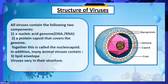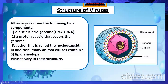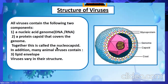Now, the structure of virus. All viruses contain the following two components: a nucleic acid genome in the head region — that is, they contain RNA and DNA, ribonucleic acid and deoxyribonucleic acid — and a protein capsid that covers the genome. This is the capsid; it covers the genome. Together, this is called the nucleocapsid. In addition, many animal viruses contain a lipid envelope, and viruses may vary in their structure.